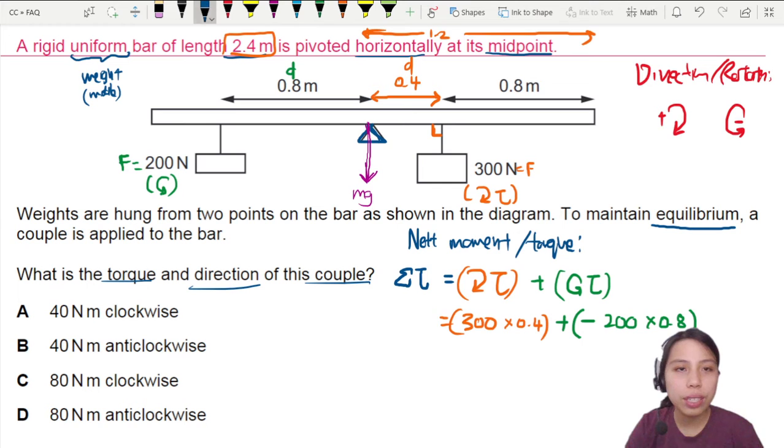Because they are fighting each other, these two torques. The total I will get is negative 40 newton meters. What does the negative tell me?